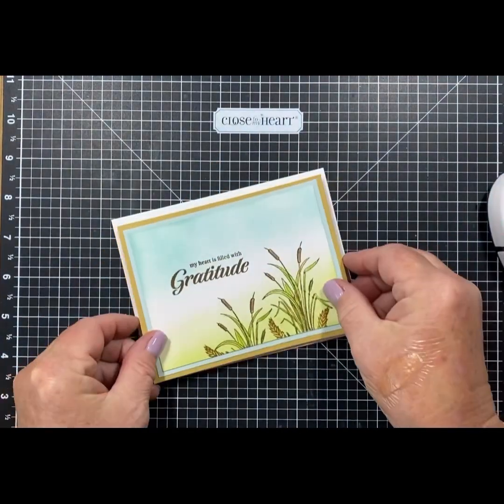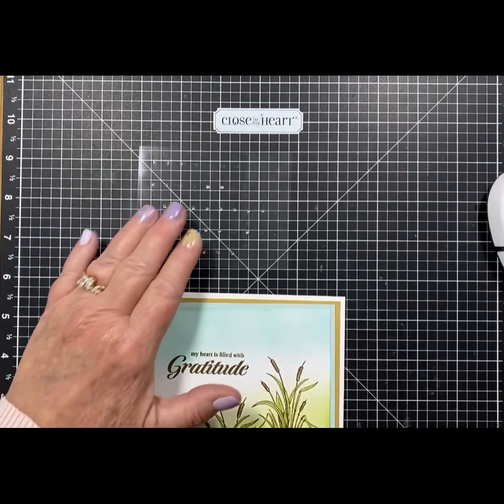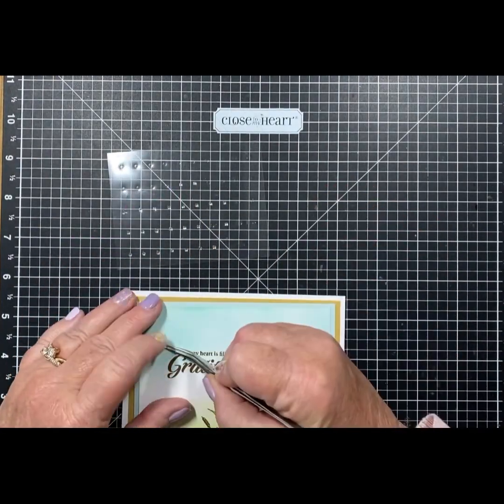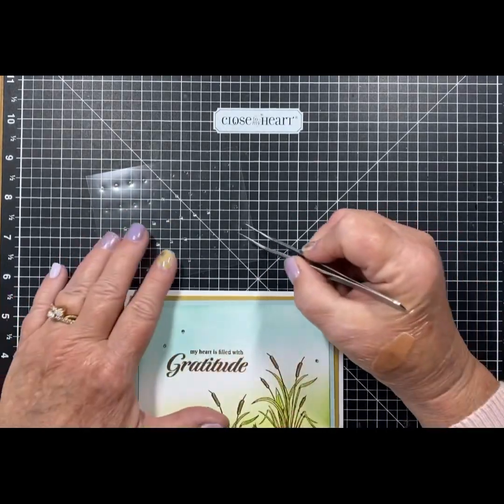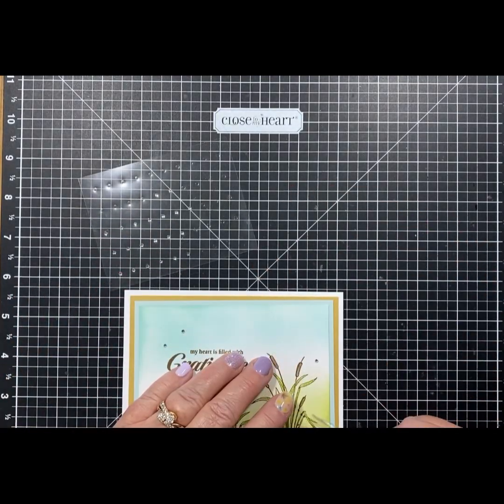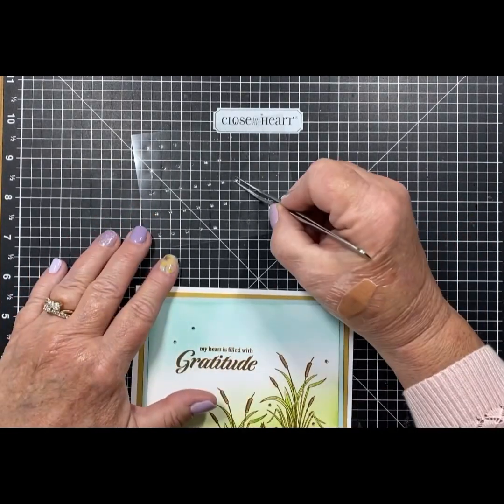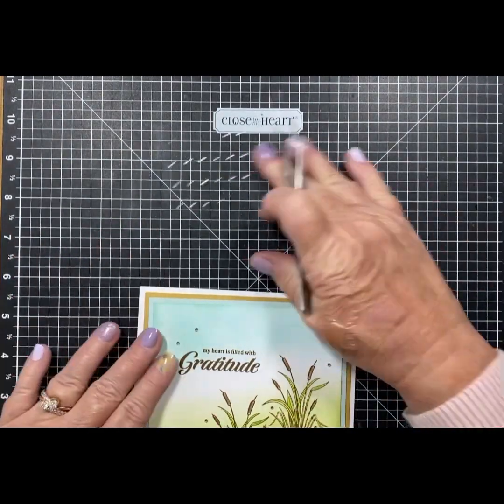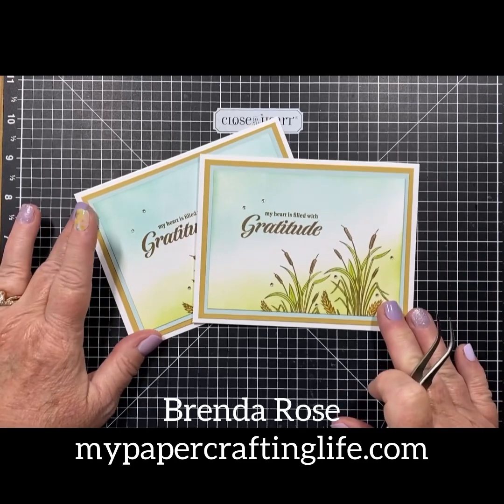I'll grab my Biddy Sparkles to add a little bit of bling to the card here and there. Those Biddy Sparkles add just the right amount of sparkle when you want something. I'm sorry that I went a little bit off the camera, but you'll be able to see the full card in just a minute with those Biddy Sparkles.